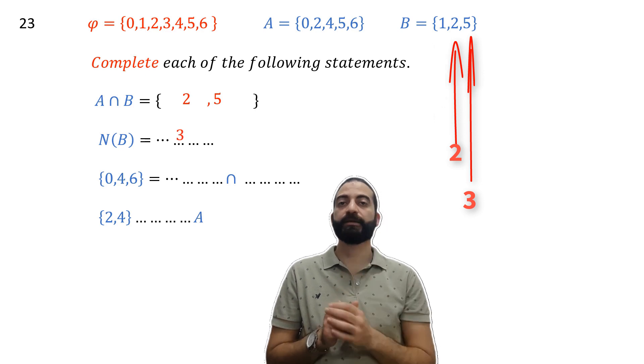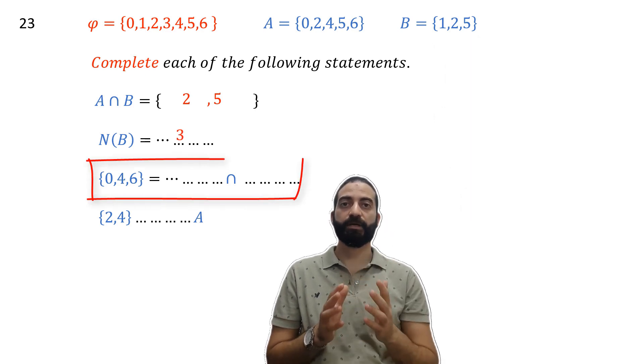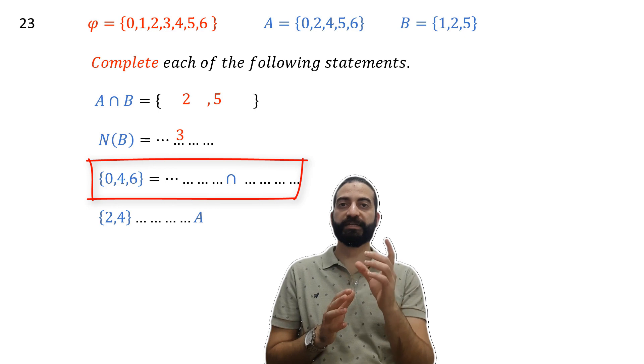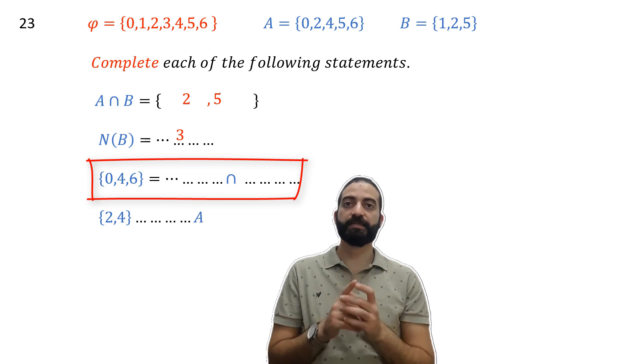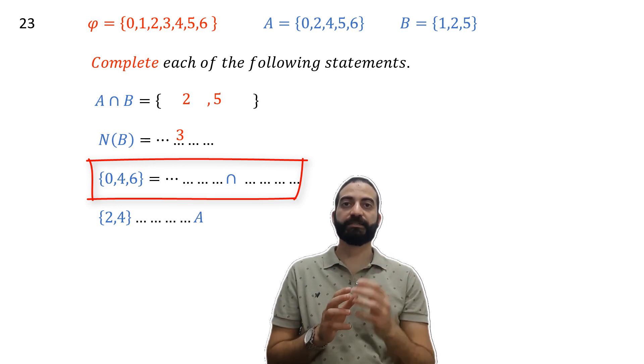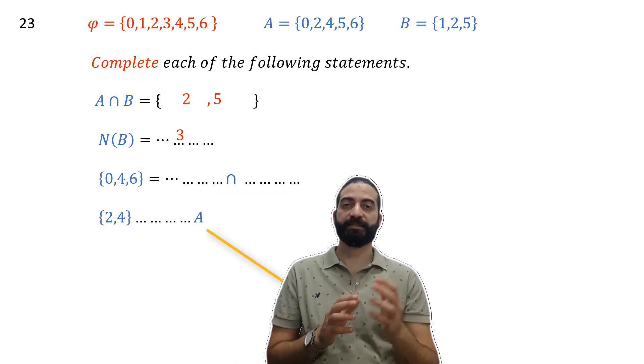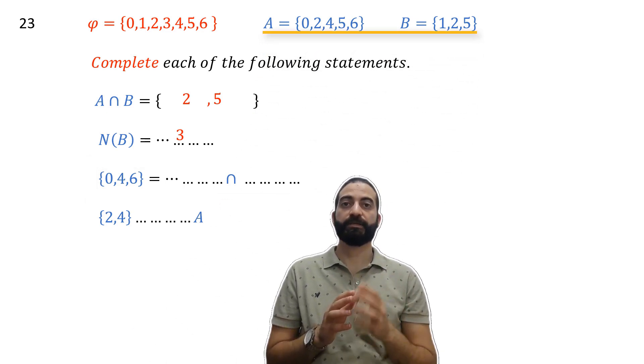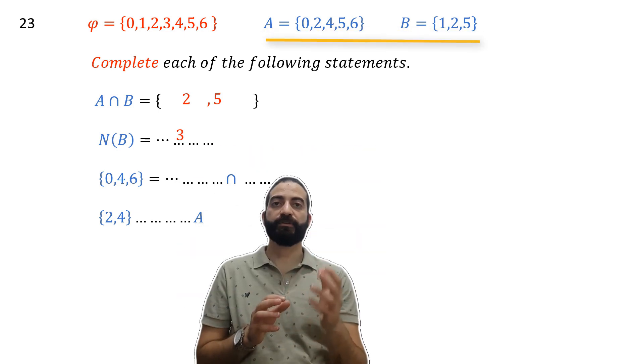We now come here. We are required to find the intersection between two sets to get {0, 4, 6}. A ∩ B is not {0, 4, 6}, so we must think about using the complement.